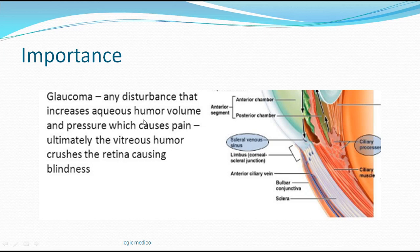Any disturbance in aqueous humor volume and pressure causes severe pain; ultimately the vitreous humor gets stretched and crushes the retina and optic nerve, causing blindness. Glaucoma is caused by increased aqueous humor production or decreased drainage. Based on the iridocorneal angle, it is classified as open-angle glaucoma (angle intact) or closed-angle glaucoma (angle approximated). It is further classified as primary (no obvious reason) or secondary (due to an underlying cause).